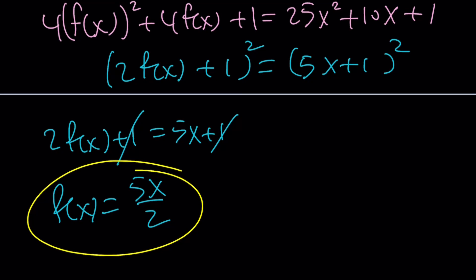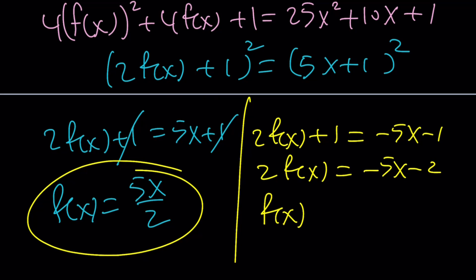And the other solution becomes 2f(x)+1. I can keep this side positive and negate the right-hand side. It doesn't matter. You can do it either way. And then from here, 2f(x) will be -5x-2. And upon division by 2, upon division by 2. Such a big word, you get the other solution. And that actually agrees with what we found before.